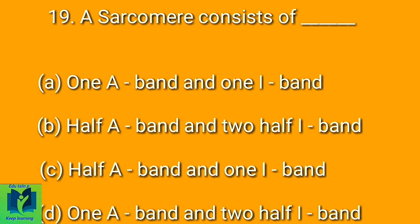A sarcomere consists of dash. Option A: One A band and one I band. Option B: Half A band and two half I bands. Option C: Half A band and one I band. Option D: One A band and two half I bands.